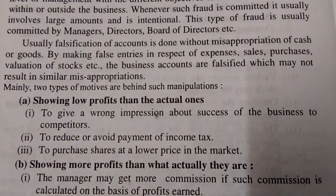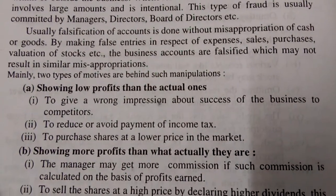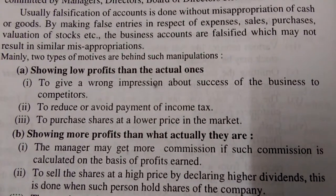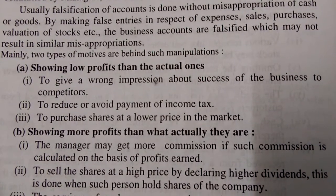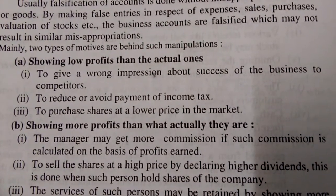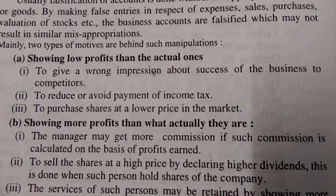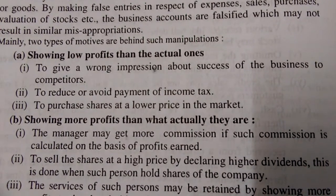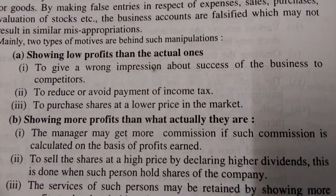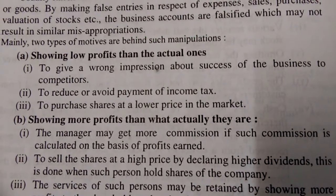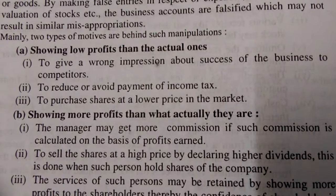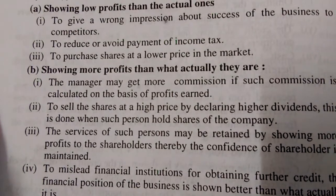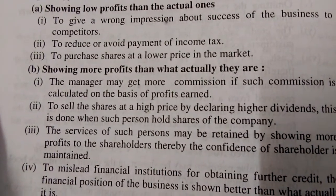Mainly two types of motives are behind such manipulation. The first one is showing low profits than the actual. In this type, there are three types of manipulations: first, to give a wrong impression about the success of the business to competitors; second, to reduce or avoid payment of income tax; and third, to purchase shares at a lower price in the market. The second motive is showing more profits than what they actually are.